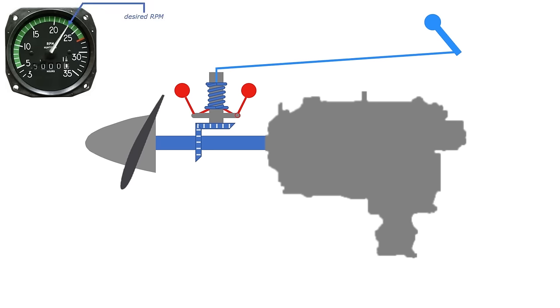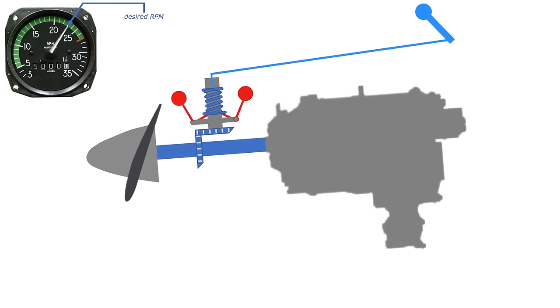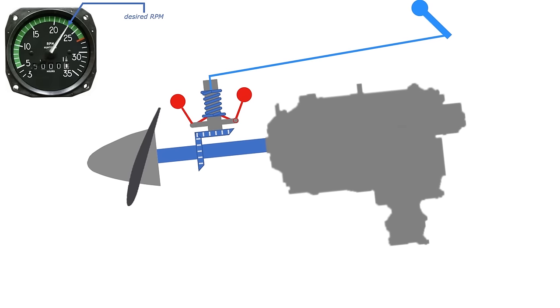Now here's what happens if the propeller RPM starts to change. Let's say we pitch down and it wants to go faster due to the blade taking a smaller bite of air. The flyweights will start to swing outwards with the faster RPM, pulling up on the bottom of the spring.